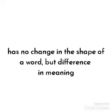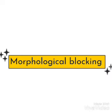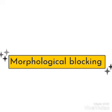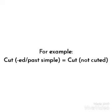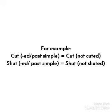This phenomenon is also known as morphological blocking. For example, the word 'cut' — in past simple will not be 'cutted,' but still 'cut.' And also for the word 'shut' — in past simple will not be 'shutted,' but still 'shut.'